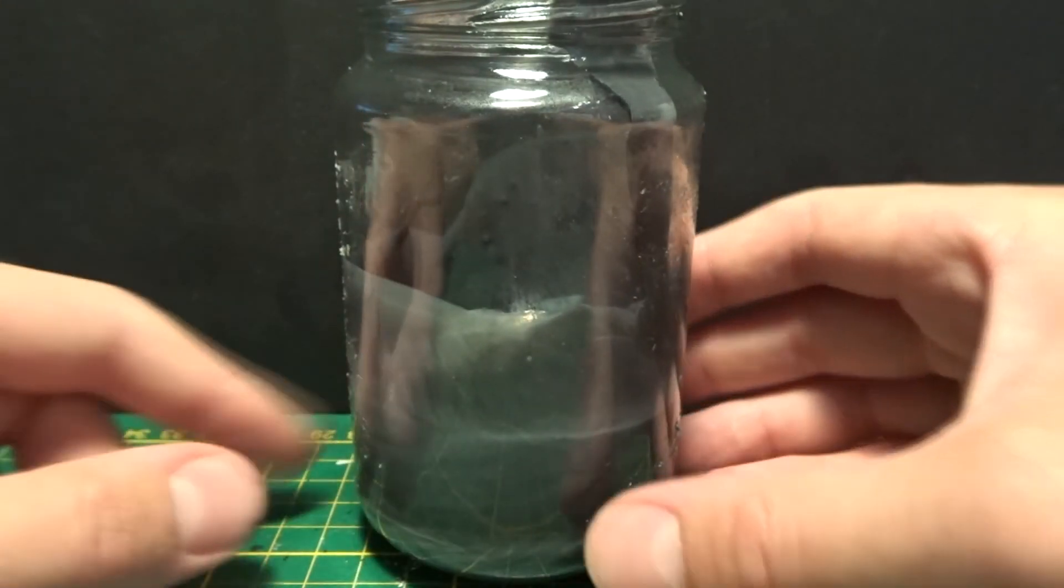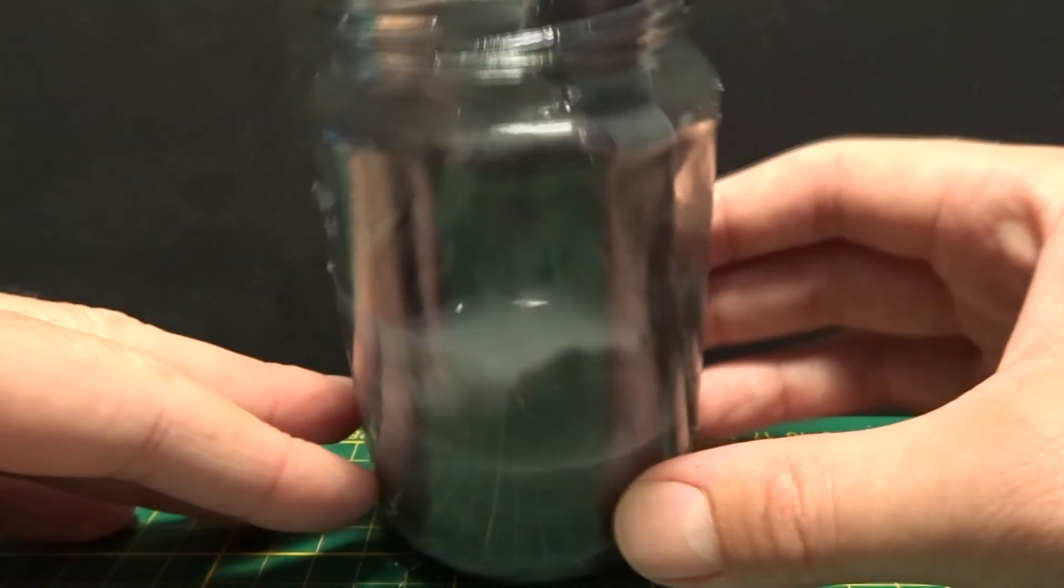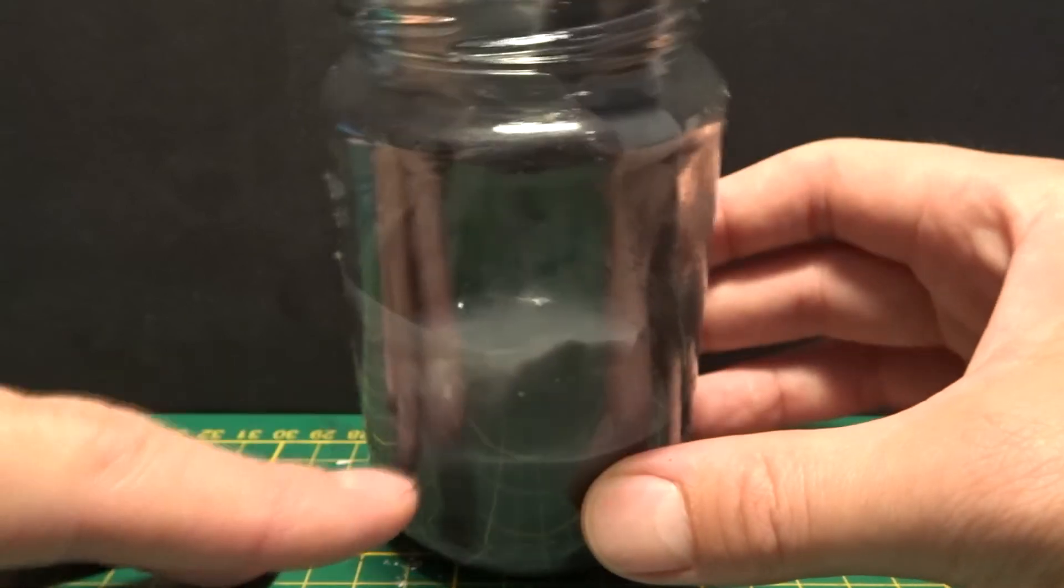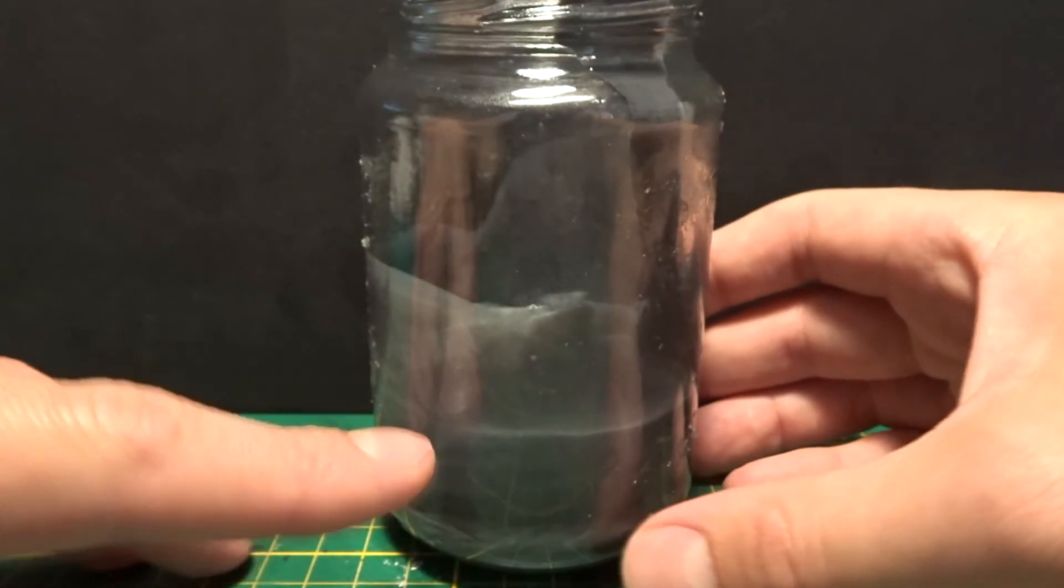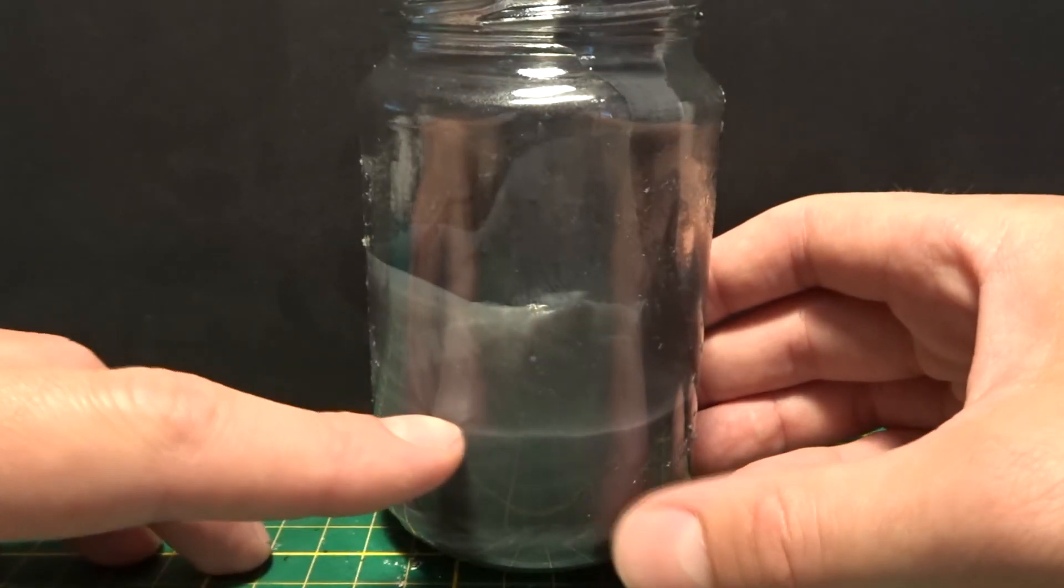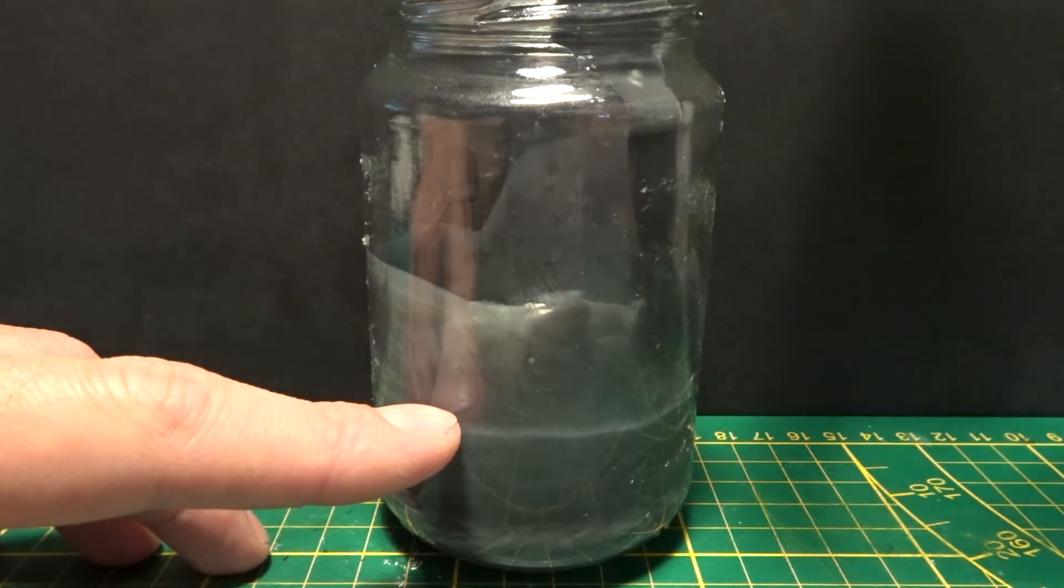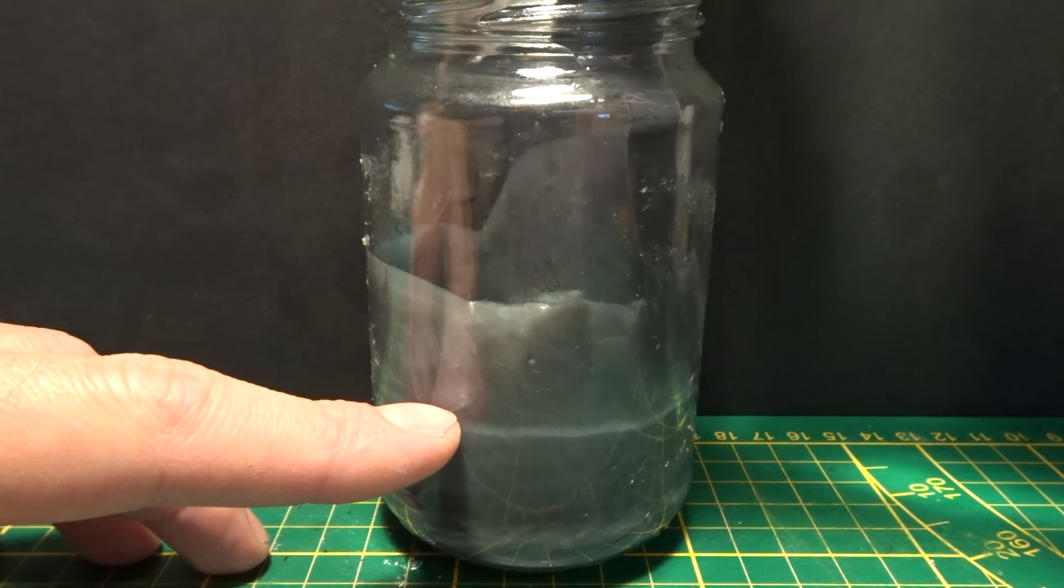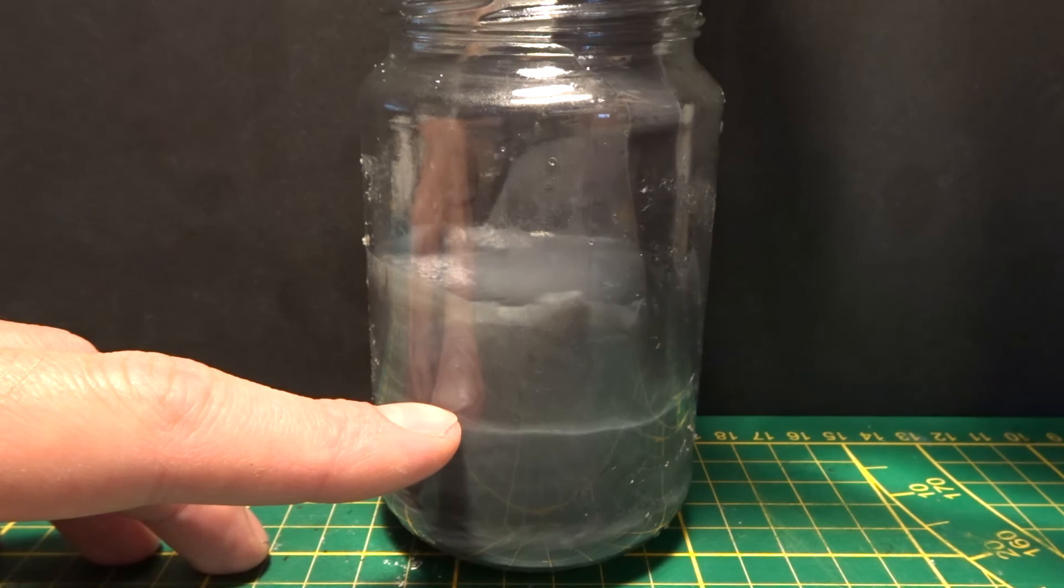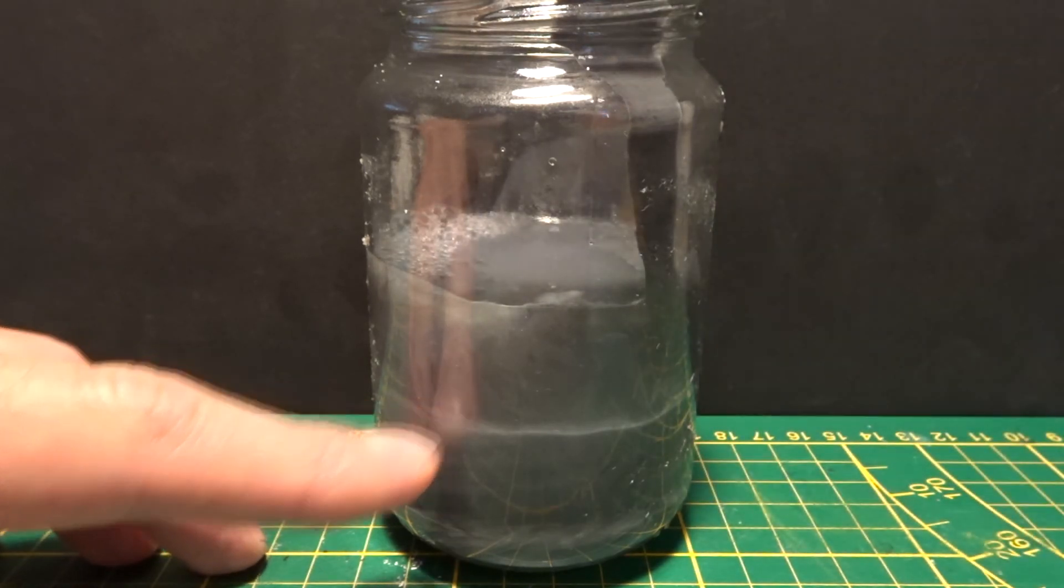And what I'm now going to do is fill it with water, almost the same amount as I've got PVA glue in it. Just this level is PVA glue. So, like this.